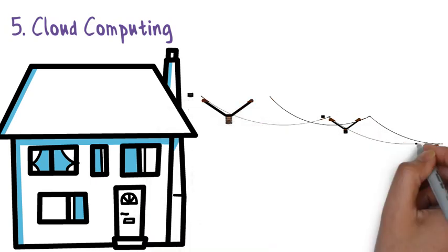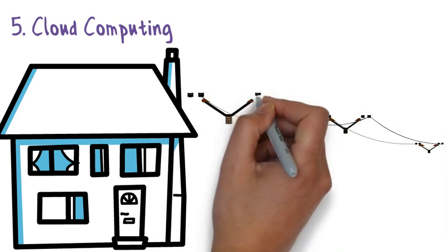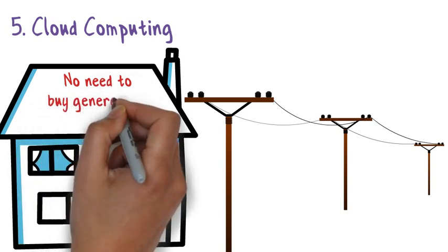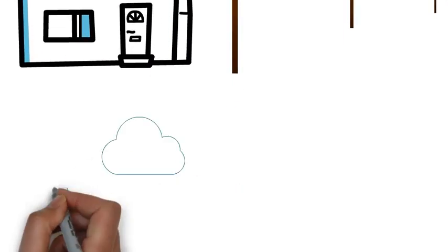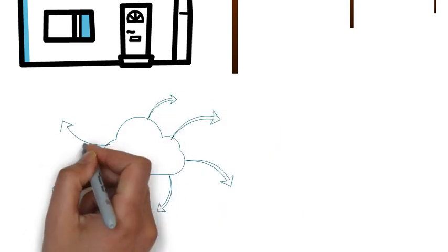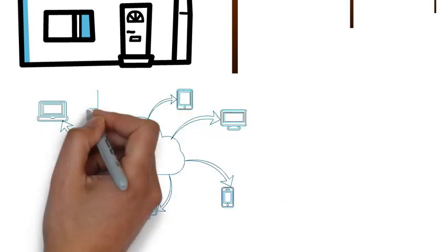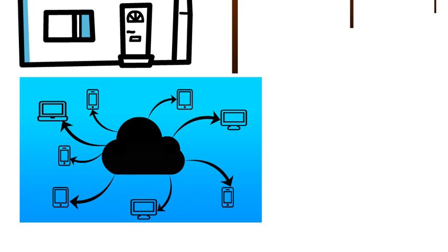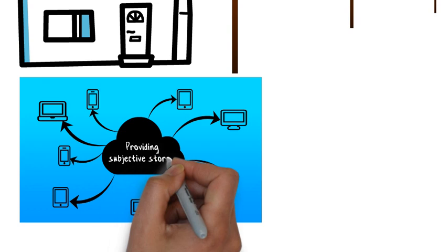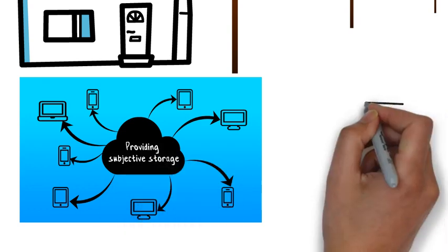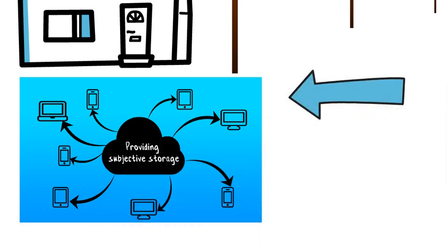But with later inventions, now we only have to pay for the electricity that we use and it is transmitted to our homes over vast distances and that too efficiently. Now apply the same concept to computational power. An organization doesn't have to buy hundreds of servers that they may not use. So they use cloud instead for their data storage.